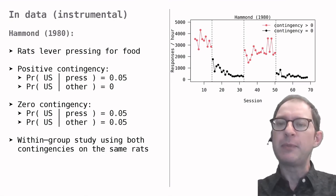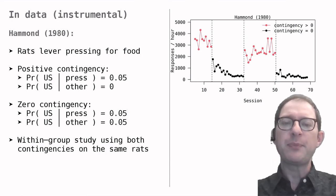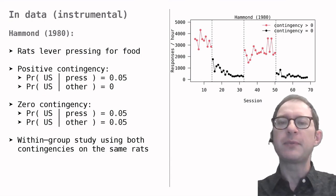To show that rats continued to pay attention to the contingency, Hammond switched them back to positive contingency and then again to a zero contingency. In both cases, the rats learned to behave appropriately, pressing when this was necessary to get food and stopping when they could get free food at the same rate.